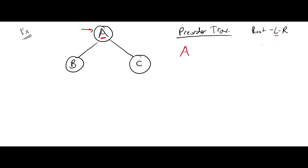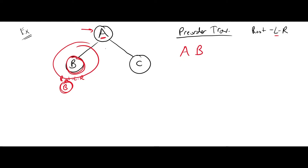Then left comes — the left subtree. In the left subtree we have only one node B, we don't have left or right subtree. So visiting root, left, and right for B: root is B, we don't have left, we don't have right, so B will be the visiting node on the left subtree of A. Then I will do the same for the right subtree of A — it's C. C is a single node, so I don't have left and right, so C is visited. The pre-order traversal of this binary tree is A, B, and C.